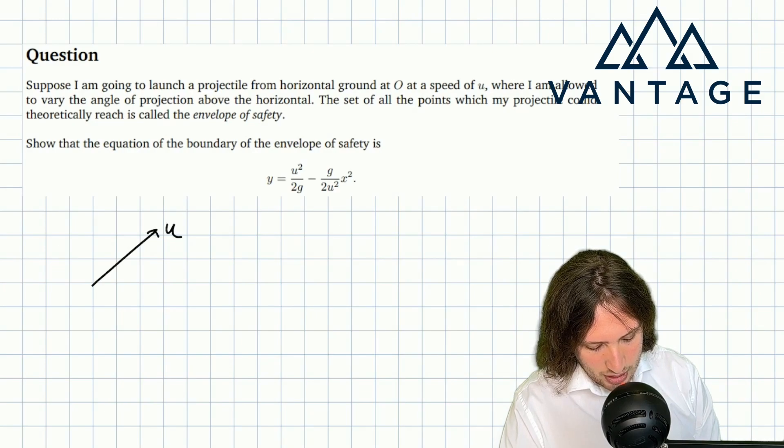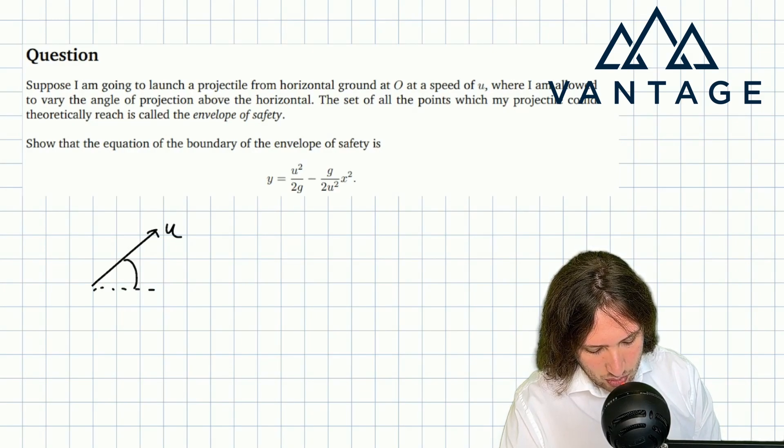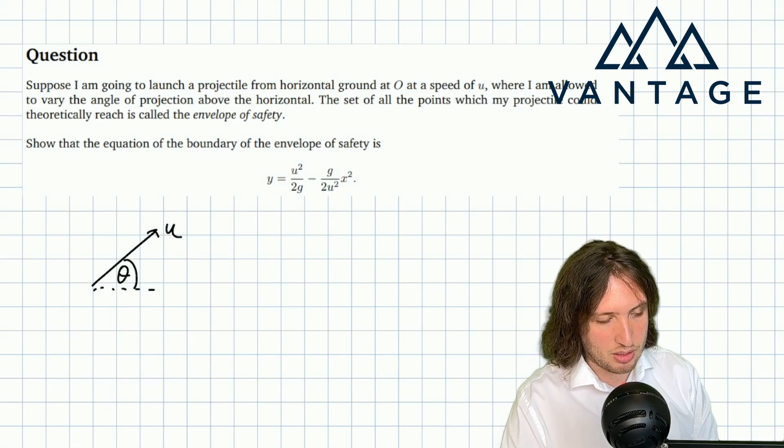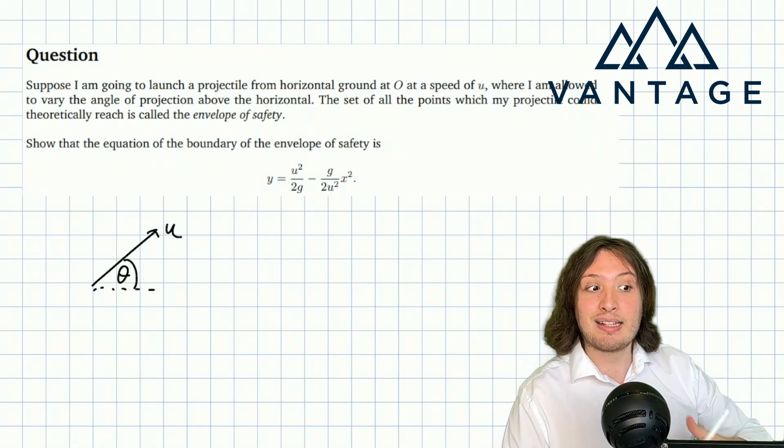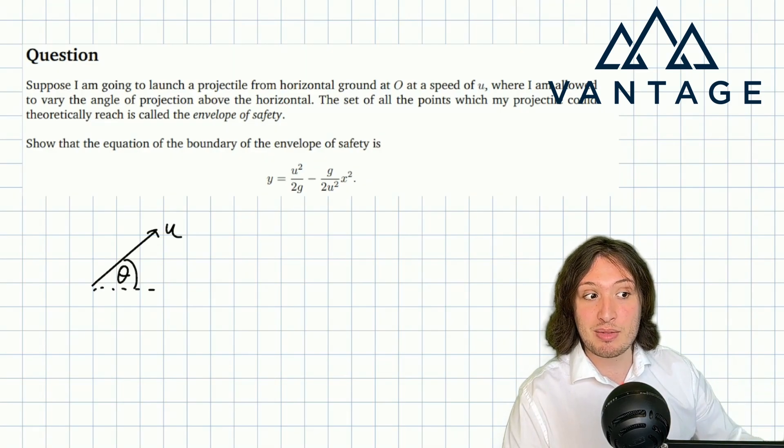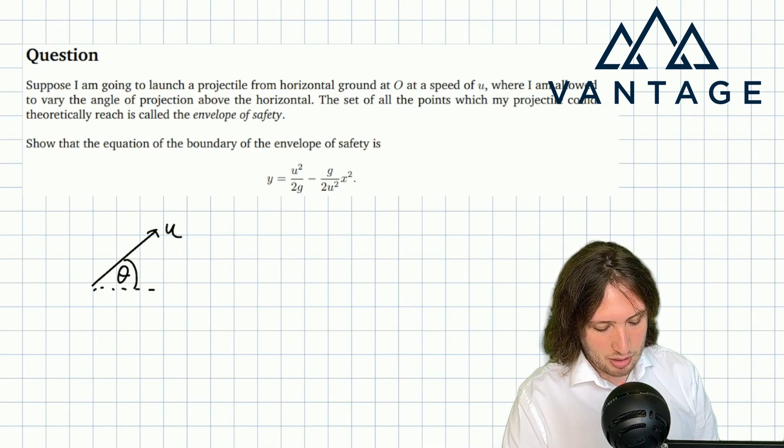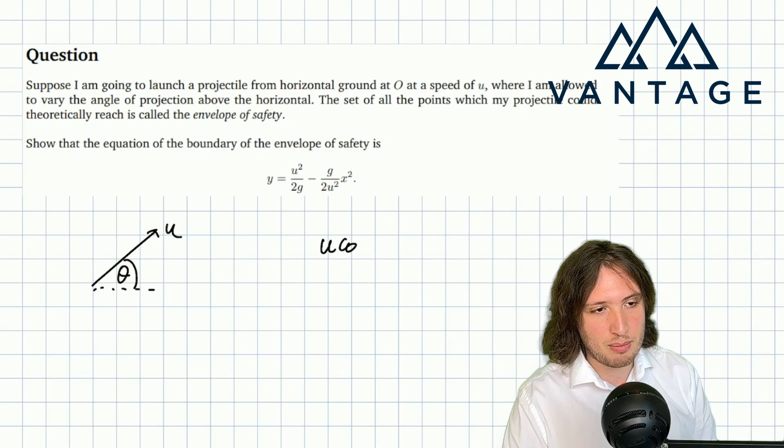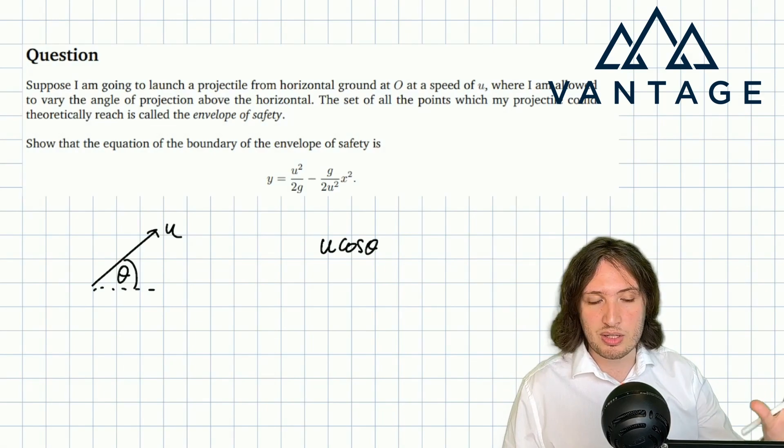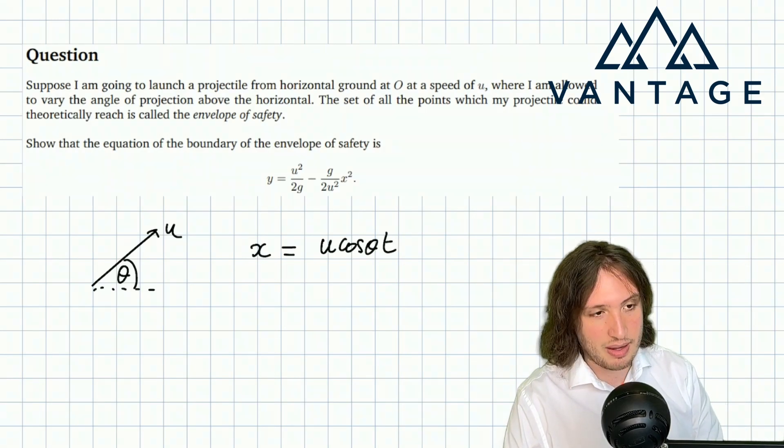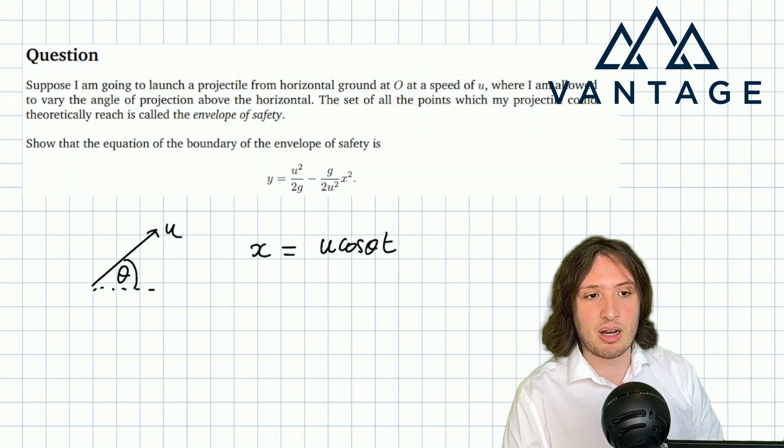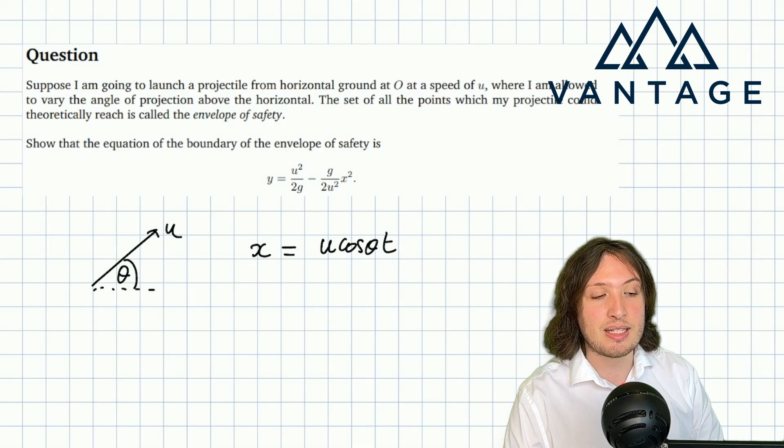If I launch at speed u at an angle θ above the horizontal, horizontally there is no force acting—we always neglect air resistance in projectile problems. My initial horizontal velocity by resolving is u cos θ, and because I'm traveling at this constant speed, I can use speed equals distance over time to see that my x coordinate after t seconds is u cos θ t.